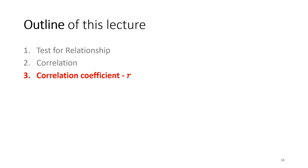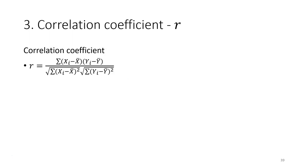In the last lecture we saw how the relationship between two variables can be measured by calculating how much they vary together. Now we are going to calculate a measurement called the correlation coefficient to show the strength and direction of the relationship quantitatively. This is the formula for the correlation coefficient — R — and it consists of two components, which we are going to discuss in detail using an example.